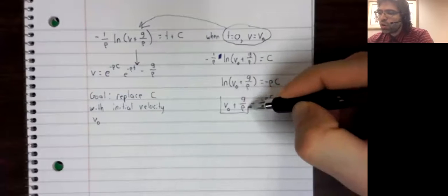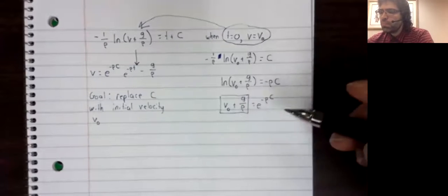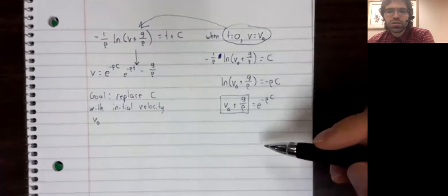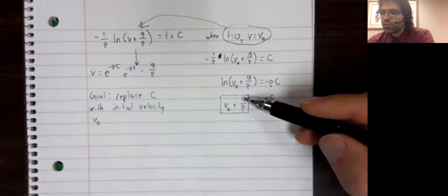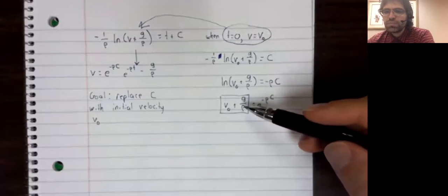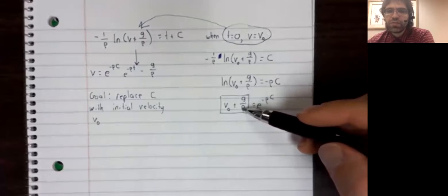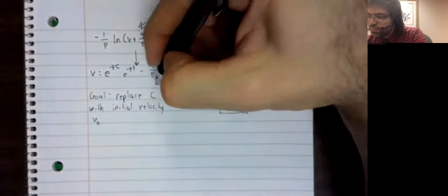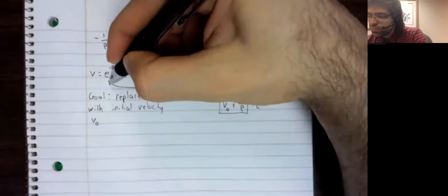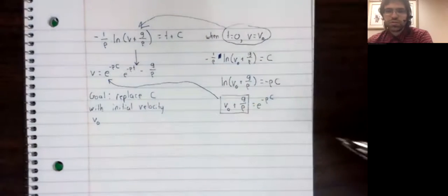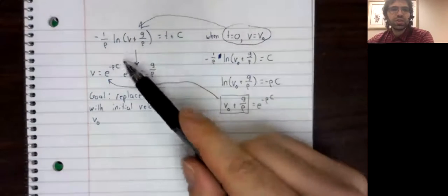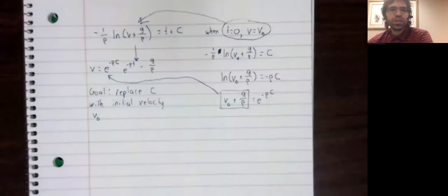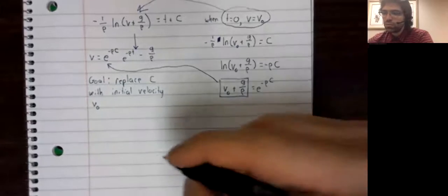In terms of the three meaningful constants, gravitation and drag coefficient. So we can take this and plug it in for e to the negative rho c.